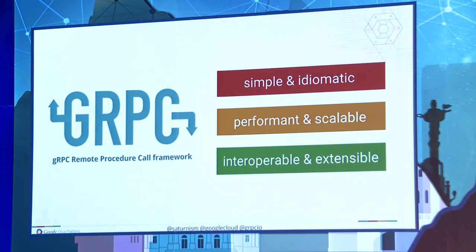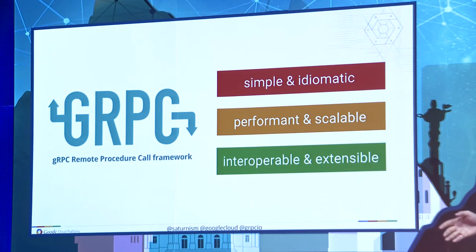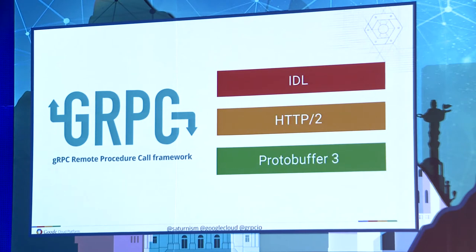gRPC is the open source version of Stubby, worked on collaboratively with Google and Square. It is designed to be simple to use and performant. The G in gRPC does not stand for Google — it's actually a recursive acronym: gRPC stands for 'gRPC Remote Procedure Code Framework.' This is an open source project the community owns. It has the concept of IDL using Protobuffer, and the payload by default also uses Protobuffer 3, a technology we use internally at Google.